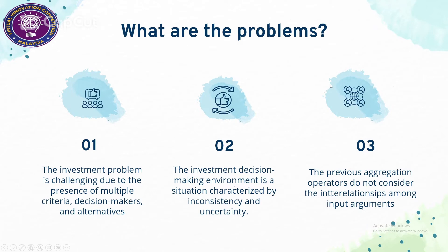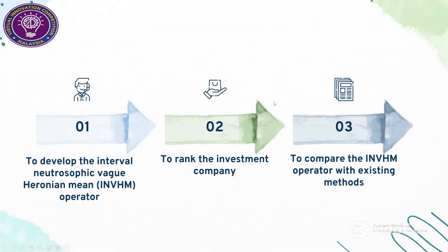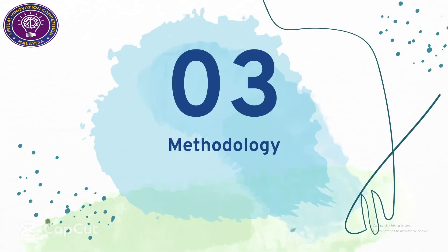The investment problem is challenging due to the presence of multiple criteria, decision makers, and alternatives. Also, the investment decision making environment is characterized by inconsistency and uncertainty, and previous aggregation operators do not consider the interrelationships among input arguments. Hence, we come up with three objectives: to develop the interval neutrosophic big Heronian mean operator, to rank the investment companies, and to compare the proposed operator with existing methods.